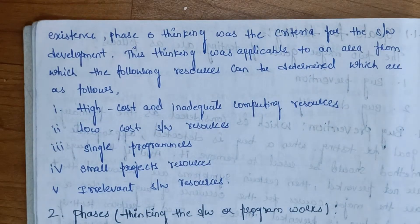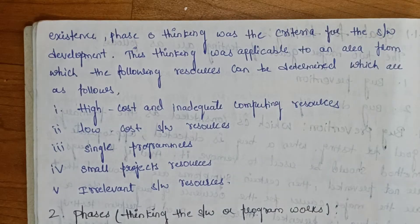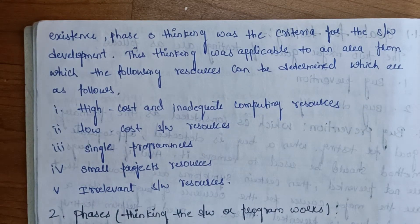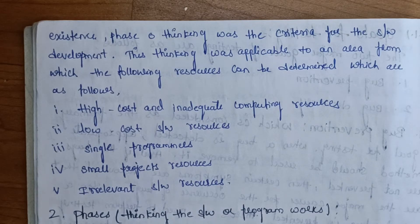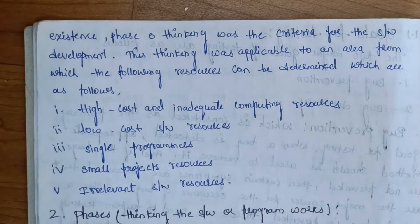So if we want to determine what we need to use, the first thinking criteria includes high cost, adequate, low cost, etc. That concludes Phase 0.